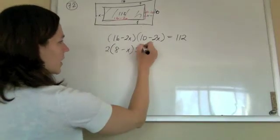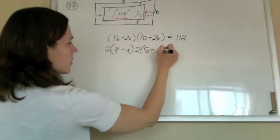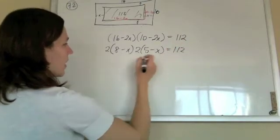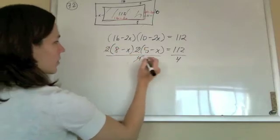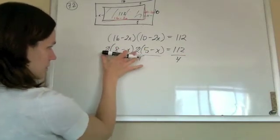So if I factor out a 2 from that, and a 2 from that, and then if I divide both sides by 4, that'll cancel out those 4s, the 2 and the 2.